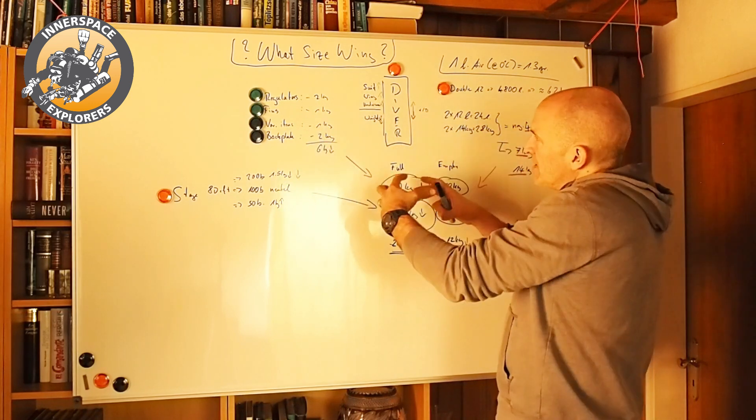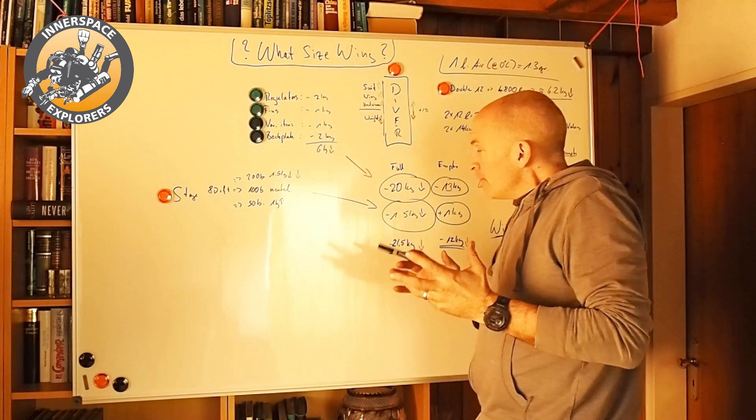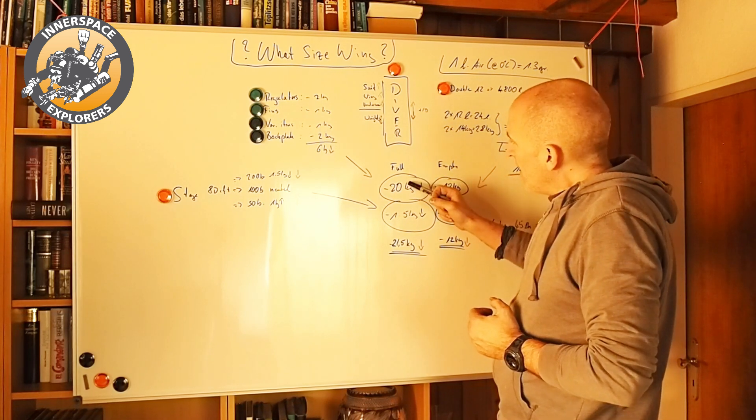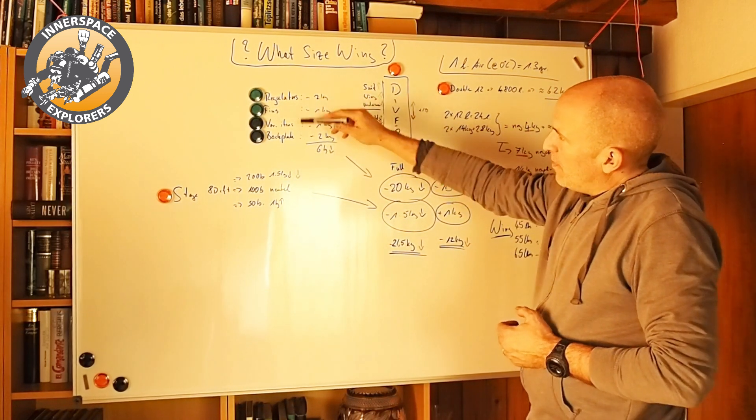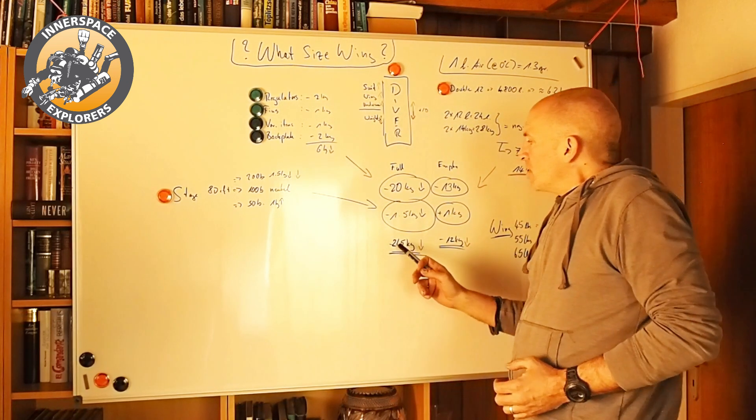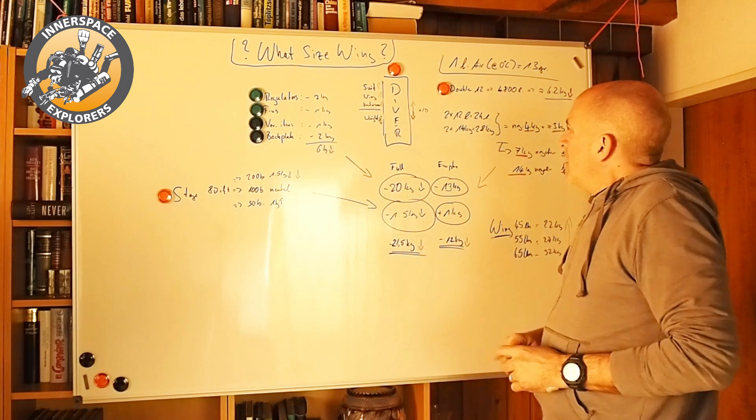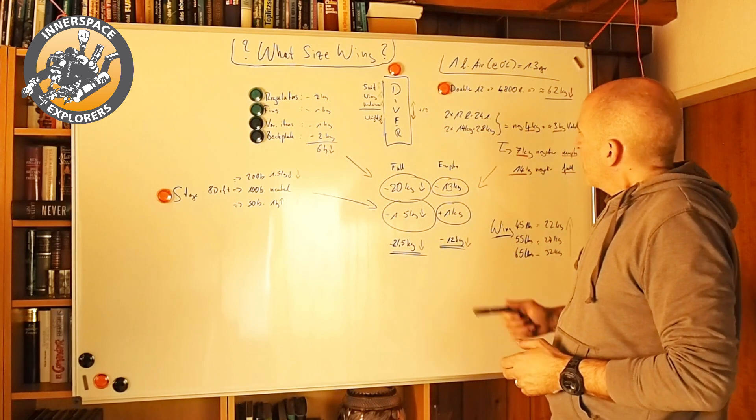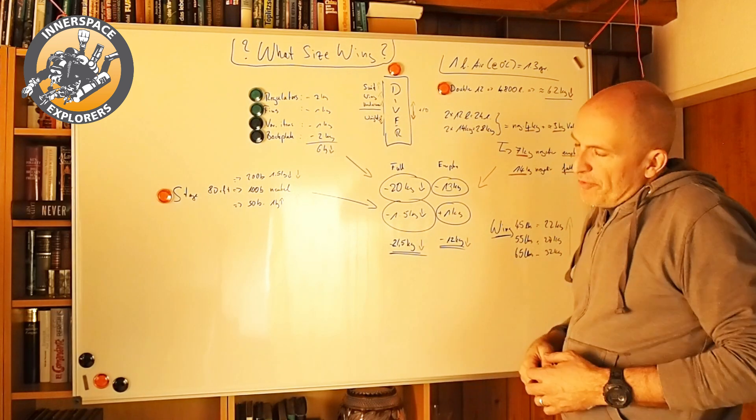So if we bring all these things together, that means full tanks, we have about 20 kilos from the 14 kilos here from the double 12, 6 kilos from our various items makes 20, and minus 1.5 from our stage, which means we are 21.5 kilos negative. So if everything is empty, worst case scenario, we have 13 kilos here from the double 12 and about 1 kilo positive from the stage, which makes us 12 kilos negative.